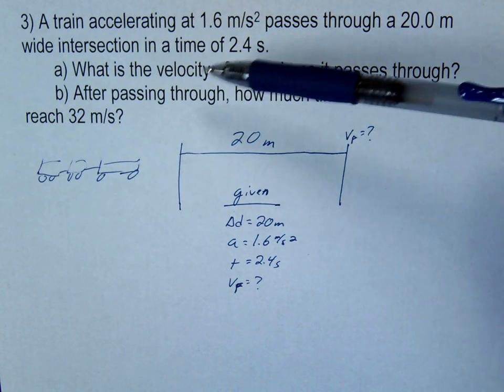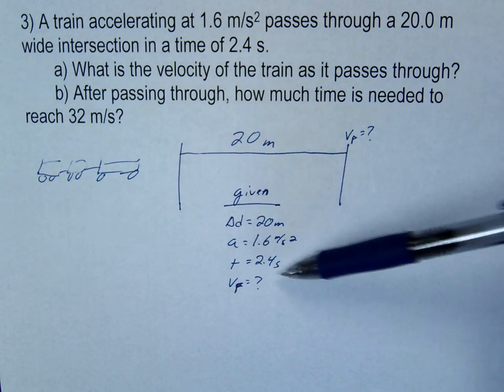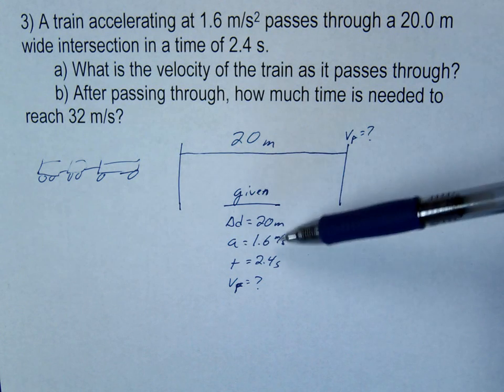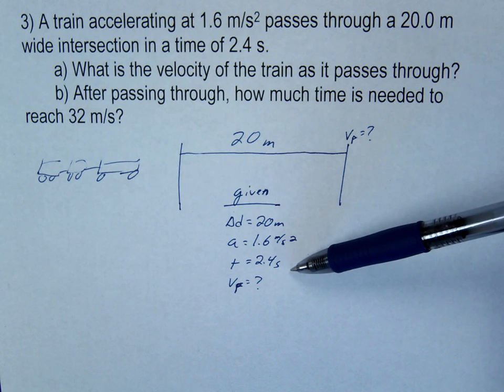The intersection's 20 meters. Maybe you have your stopwatch, you're timing how long it takes, 2.4 seconds. So here's your givens: 20, 1.6, 2.4.